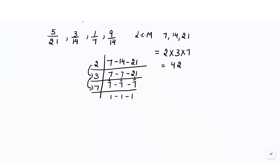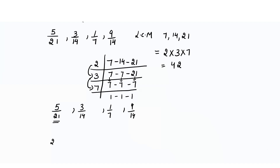We write the original fractions: 5/21, 3/14, 1/7, and 9/14. To change 21 to 42, multiply by 2, so the numerator becomes 5 × 2. To change 14 to 42, we need to multiply by 3 — you can verify this by dividing 42 by 14, which gives 3.